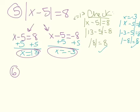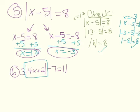Moving on to a harder problem. I have three times the absolute value of four x plus two minus seven equals 11. When you get something like this, there are many steps involved. Your first goal is to get the absolute value bars — everything inside — by itself. It is important that you do not automatically use the distributive property. In other cases, such as if there's a negative, it would mess up your whole problem. Just try to isolate everything in the absolute value bars first.